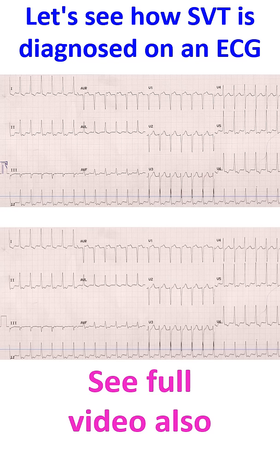Now we will go into the tachycardia part of it and calculate the heart rate. The RR interval is 10 millimeters. So 1500 divided by 10, we get a heart rate of 150 per minute. We know that tachycardia is a heart rate above 100 per minute in an adult.